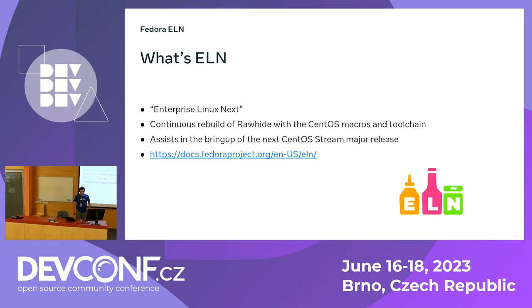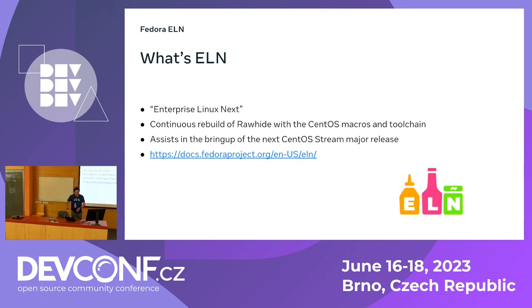ELN stands for Enterprise Linux Next. There is an explanation of the puns in the name on the website that I will not try to repeat. It is a continuous rebuild of Rawhide using the CentOS macros and toolchain. The idea is that every day we take Fedora Rawhide, rebuild it using the same macros that would be used if we were cutting a new CentOS stream train today, and put the compose out. You get a preview of what CentOS stream would look like if we were starting today. It is part of the development process for stream and for RHEL.